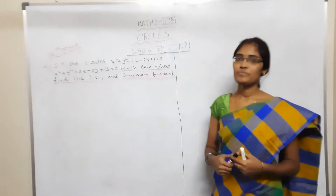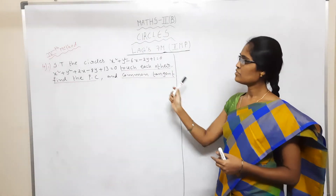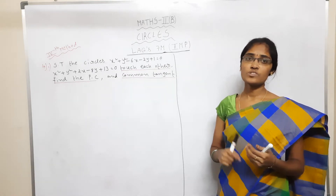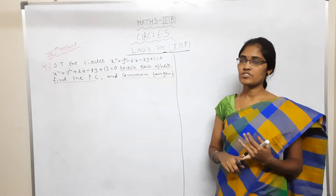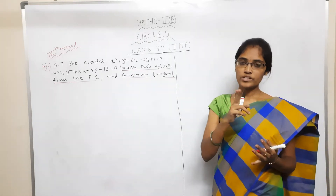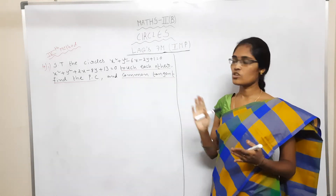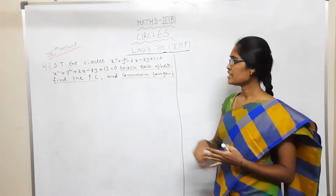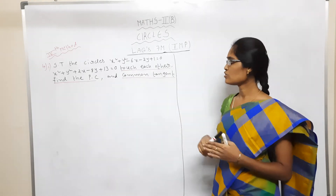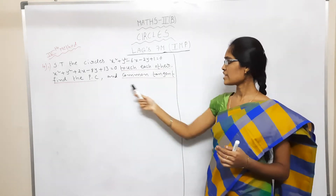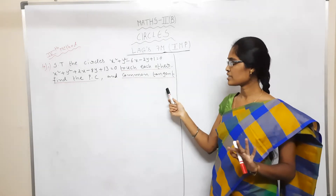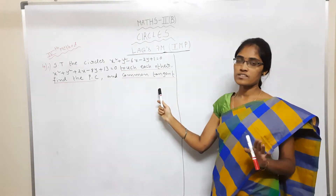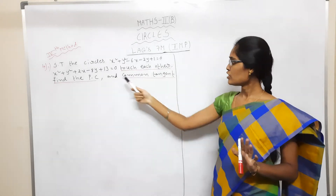Welcome to Siksham Hats Academy. Circles continuation, fourth method. So three methods discussed already — first method using three points to find the circle equation, second method is two points on a line, third method conceptually. Now the fourth method: show that two circles touch each other at a point of contact with a common tangent. The video discusses three cases.